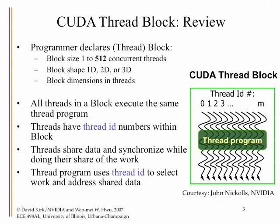If you look at each thread block in detail — whether 1D, 2D, or 3D — you can think of it as a collection of threads that all execute the same piece of code, the thread program. It's important to remember that you can only have up to 512 threads in each block. That's one of the limitations you need to keep in mind.